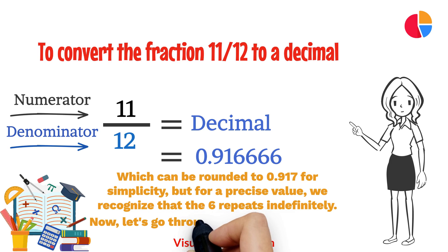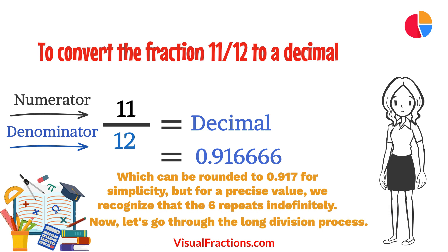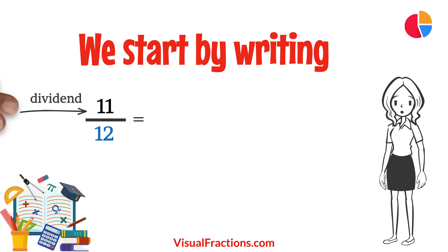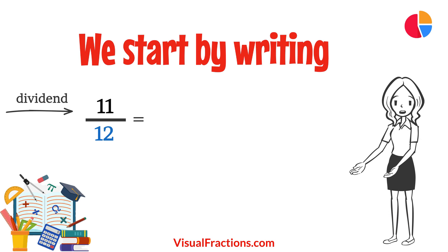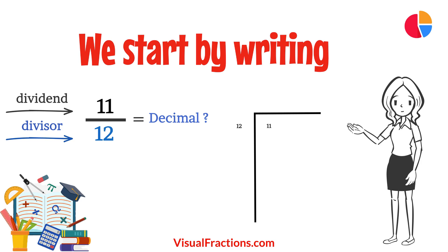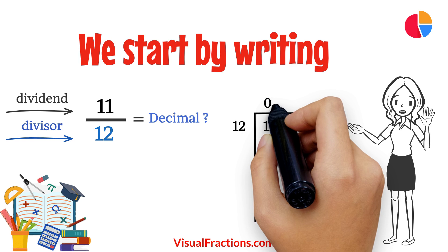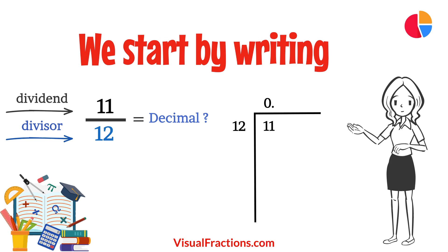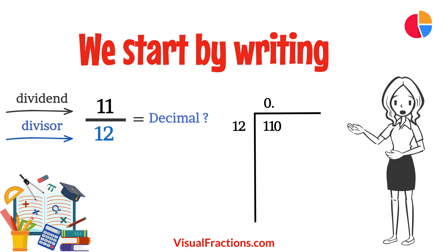Now, let's go through the long division process. We write 11 as the dividend and 12 as the divisor. Since 12 doesn't fit into 11, we add a decimal point in our answer and append a 0 to 11, making it 110.